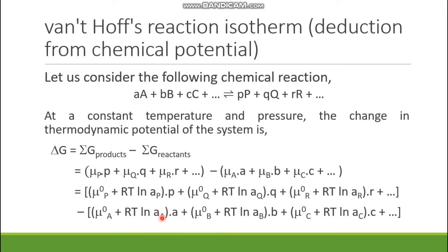Don't get confused with all the A's — there are three A's. Capital A is the name of the reactant. The second A is the activity of reactant A. And the third a is the stoichiometric coefficient of A, meaning the number of moles of A.